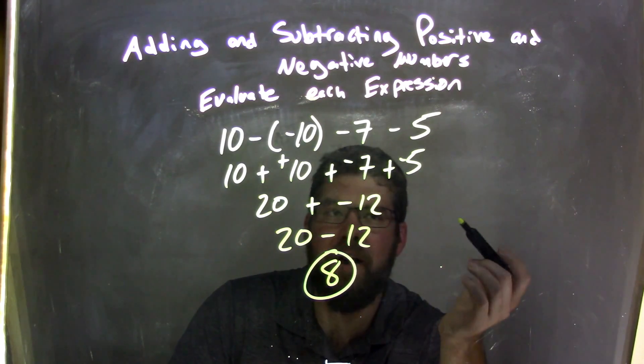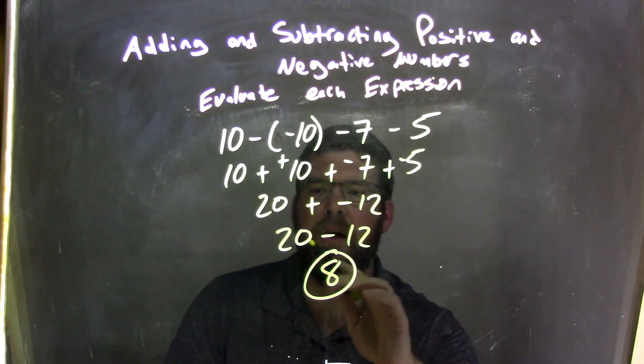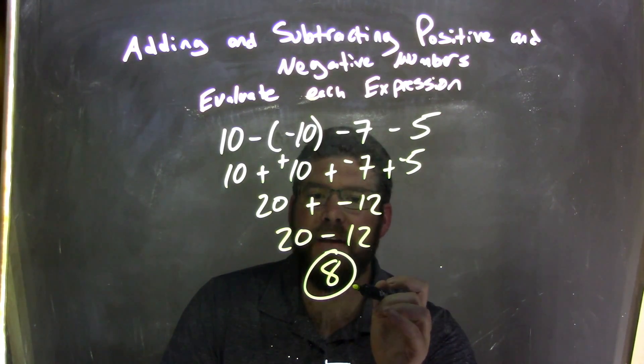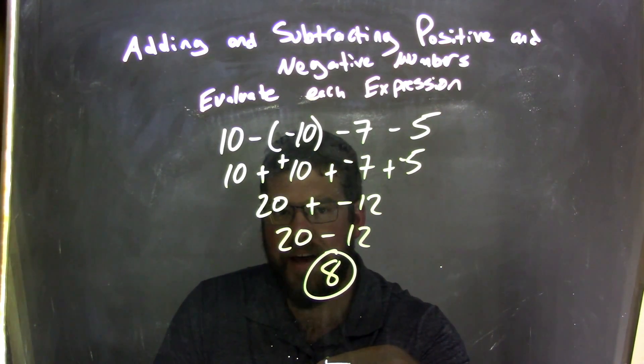Just like 7 plus 5 is 12, negative 7 plus negative 5 is negative 12. Now we have 20 plus a negative 12. 20 minus 12 is 8, and there is our final answer.